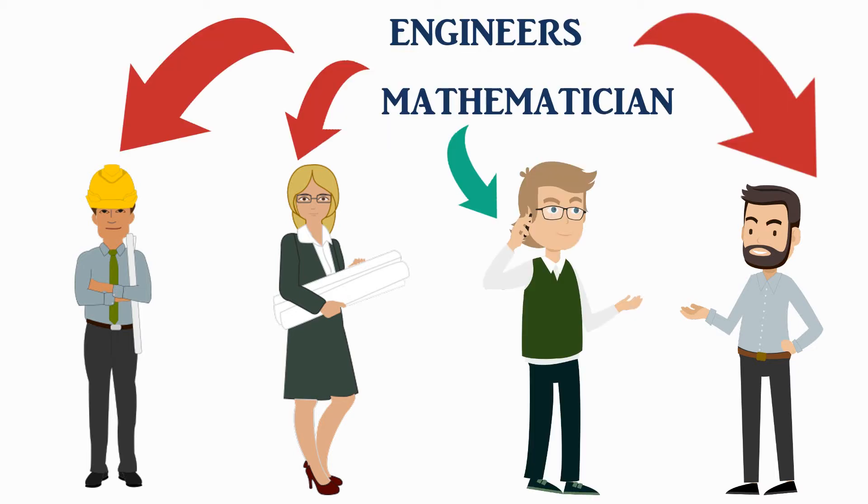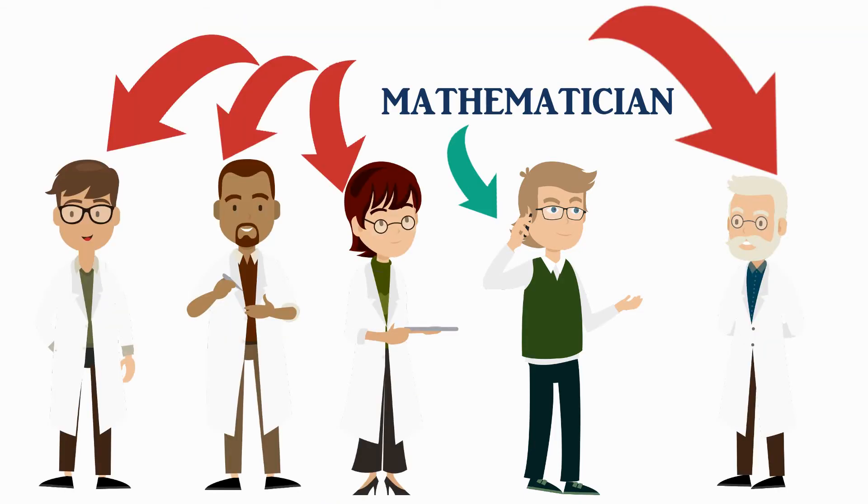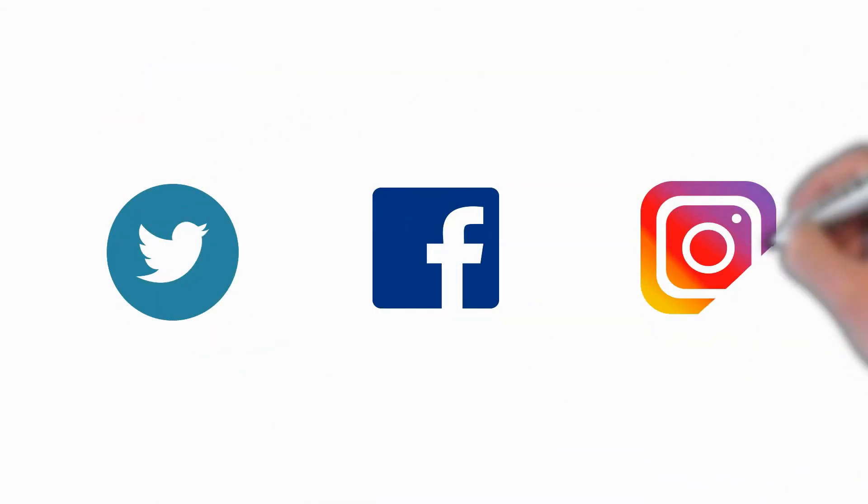The engineers mentioned previously use mathematical principles in the design of the various items they build, as do rocket scientists, space scientists and climate scientists. So do programmers that make the apps to go on your computer and mobile devices, apps like Facebook, Twitter and Instagram.